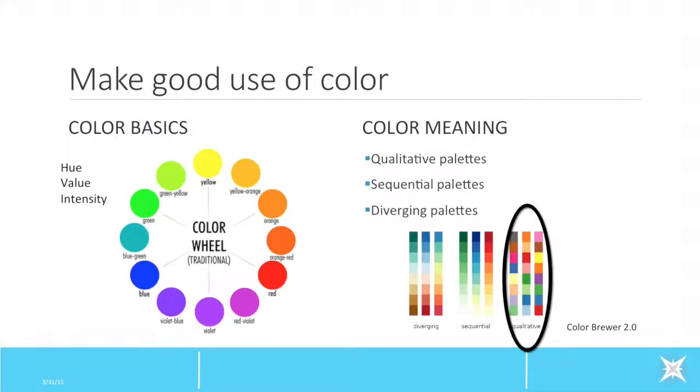Qualitative palettes include colors that are distinctly different from each other. They are most successfully used to represent categorical data.